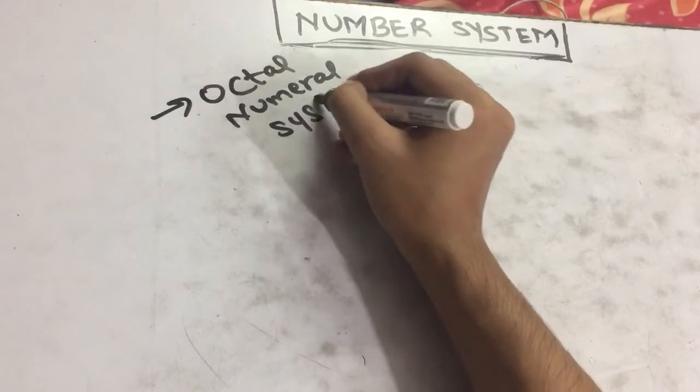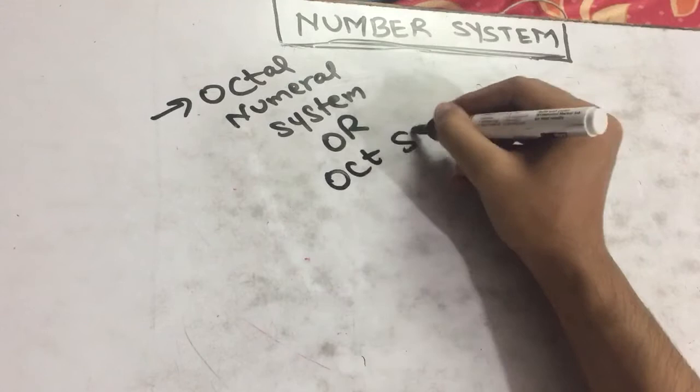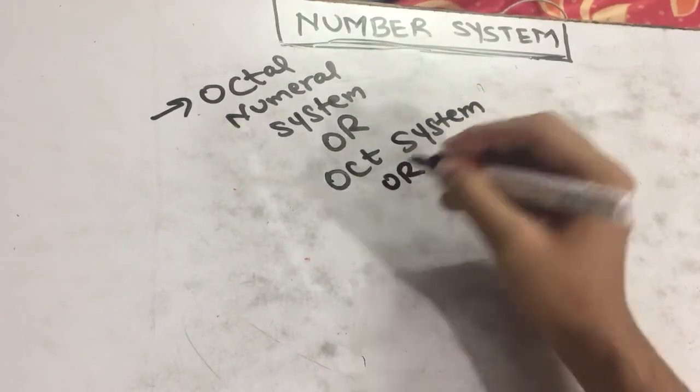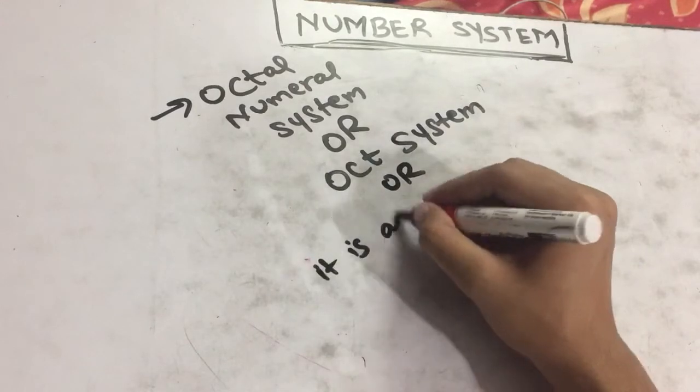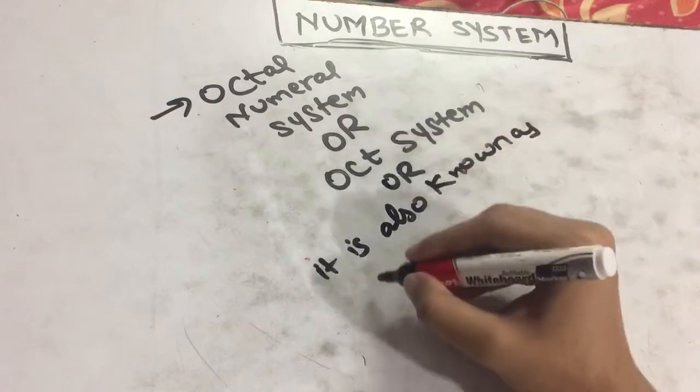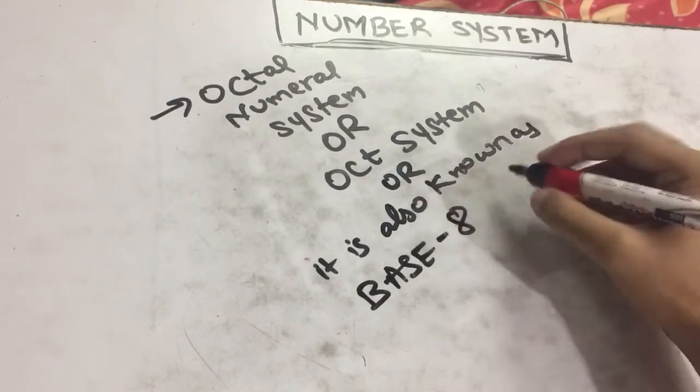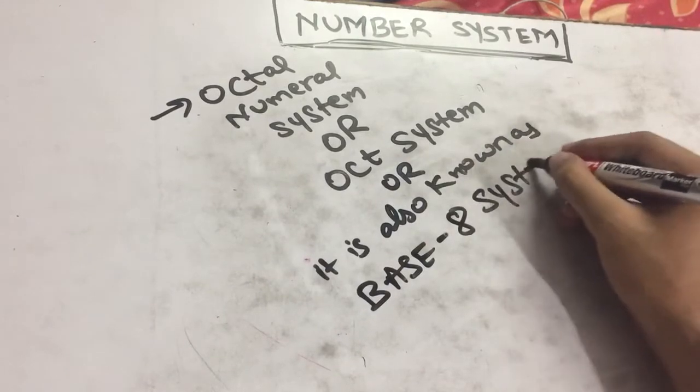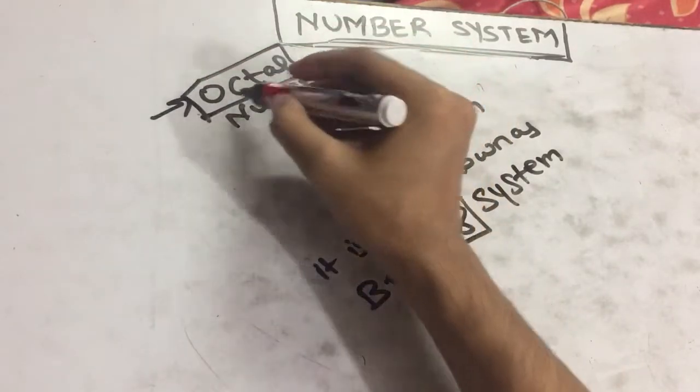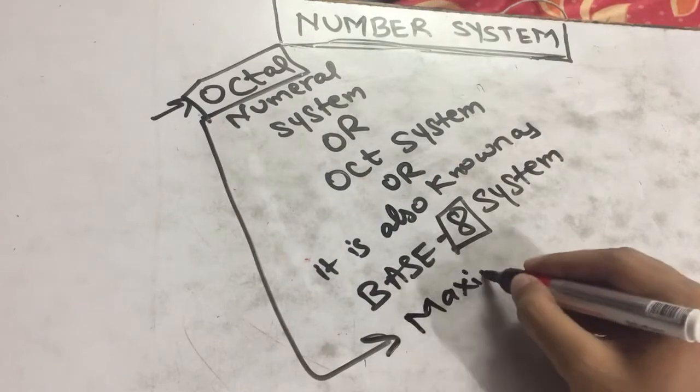The octal system, also known as base 8 system. By base 8, as you can see in the name octal, it can have a maximum of 8 symbols.